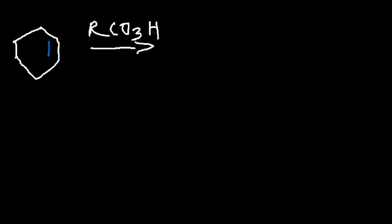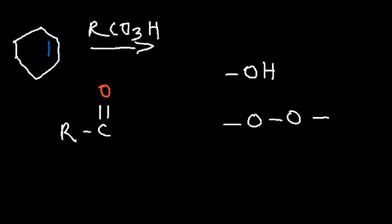A peroxy acid looks like a carboxylic acid, but it has a peroxide group as well. Like a carboxylic acid, it has the carbonyl functional group, but it also has a peroxide instead of a hydroxyl group. A hydroxyl group is an OH, whereas a peroxy group has two oxygens connected by a single bond. So a peroxy acid looks like this.